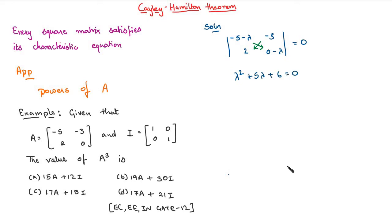Now, according to Cayley-Hamilton theorem, every square matrix satisfies its characteristic equation. So, we can replace lambda by A, then A square plus 5A plus 6 into I, where I is an identity matrix.